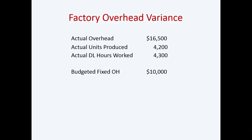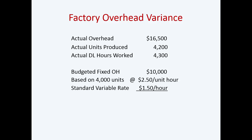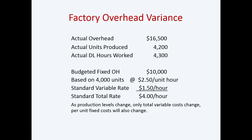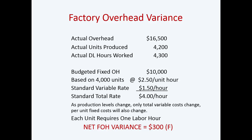Looking at an example: actual overhead, actual units produced, actual direct labor hours worked. Budgeted fixed overhead is based on 4,000 units at $2.50 per unit hour. The standard variable rate is $1.50 an hour and the standard total rate is $4 an hour. As production levels change, only total variable costs change — fixed costs remain unchanged in total, but per-unit fixed costs will change. Each unit requires one labor hour. Looking at the financials, there's a net factory overhead variance of $300 favorable. But you still have to do an analysis, because there could be unfavorable components that, if left unanalyzed, you won't be able to fix the problem.